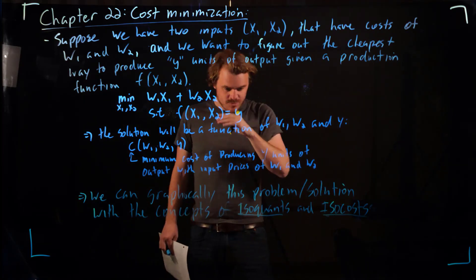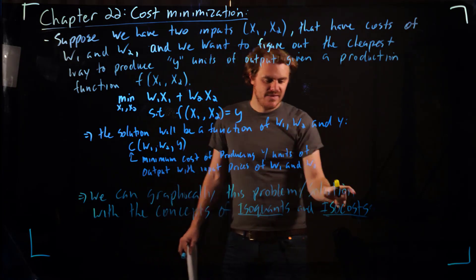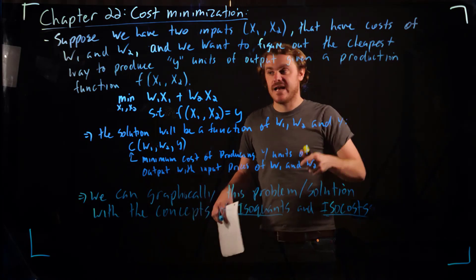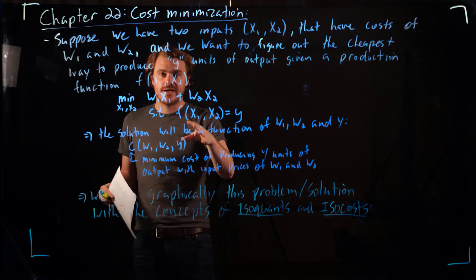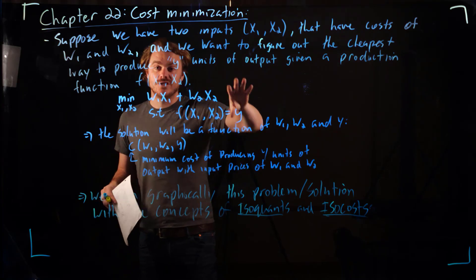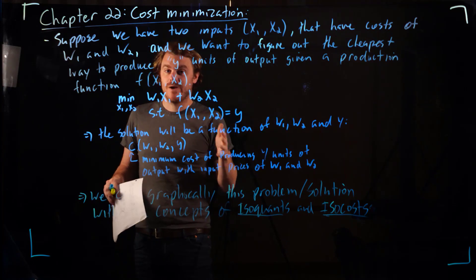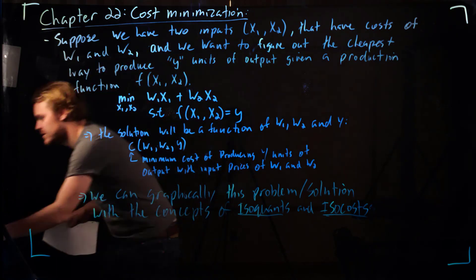Let's erase this board and remind ourselves about what isoquants are. Then let's introduce the concept of isocosts. We can bring it together and talk about what graphically this problem looks like and a solution to it. We'll also deal with some extreme situations that we might encounter.